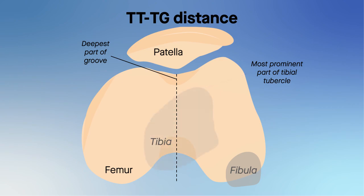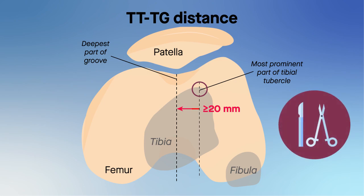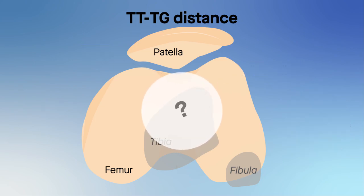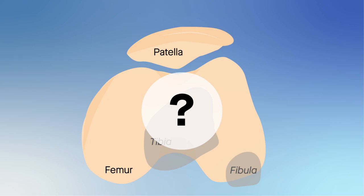A TT-TG distance of 20 millimeters or more is a common indicator that the tibial tubercle is too far lateral on the tibia, and thus grounds for corrective surgery. But a new study suggests there may be more than meets the eye, and that the TT-TG distance may not solely or even partially represent a lateral tibial tubercle.